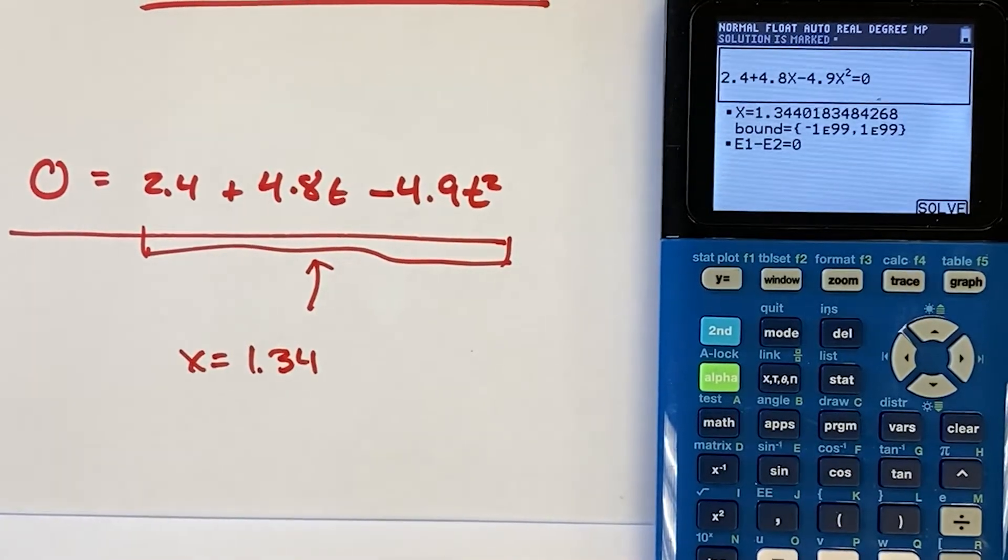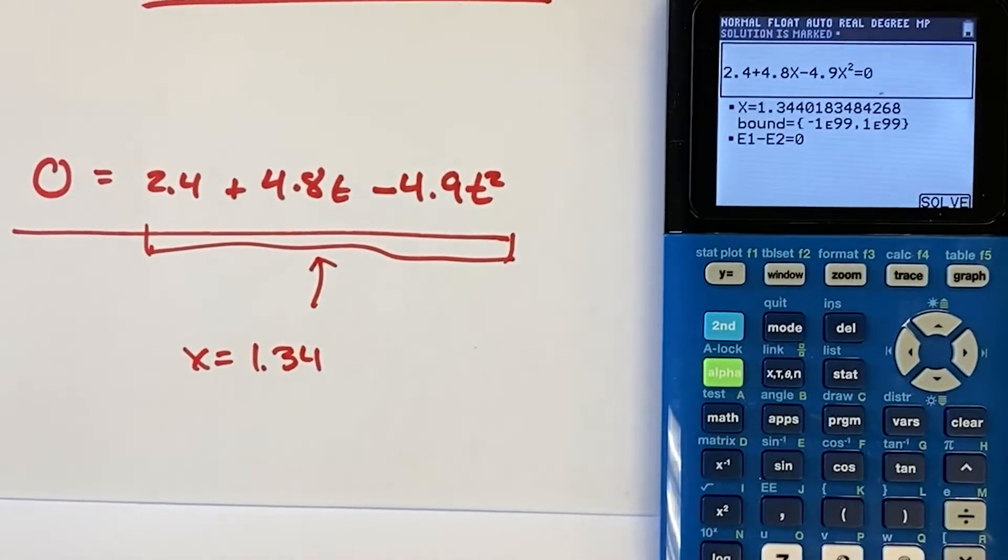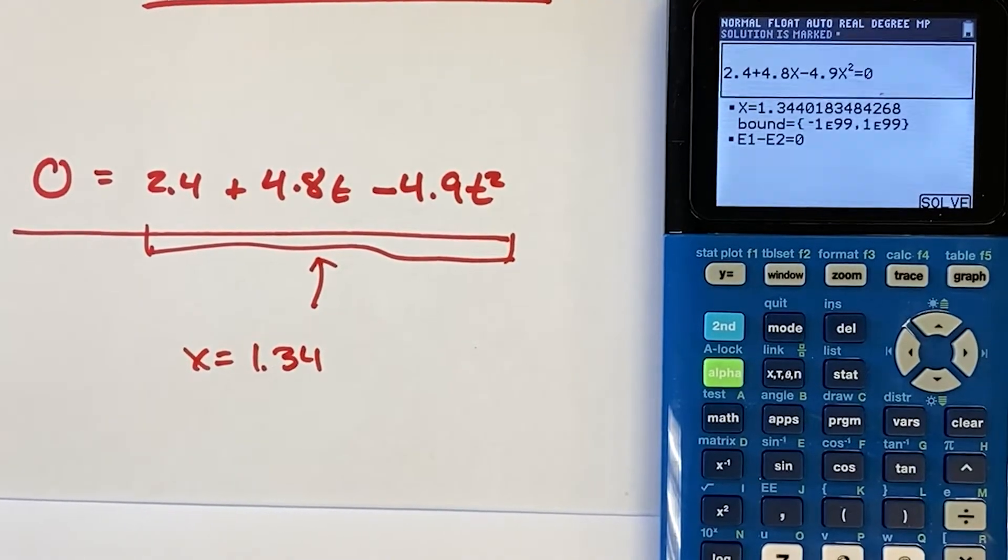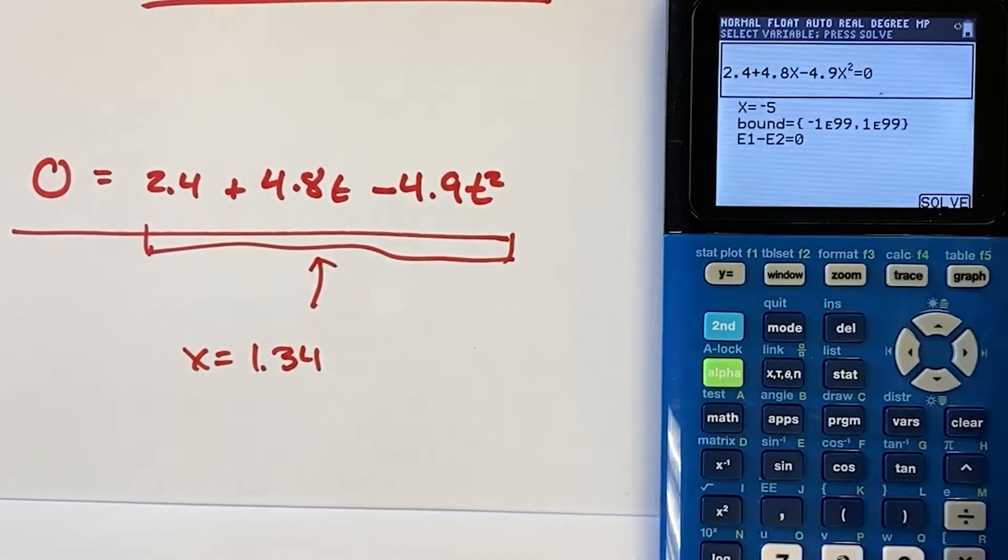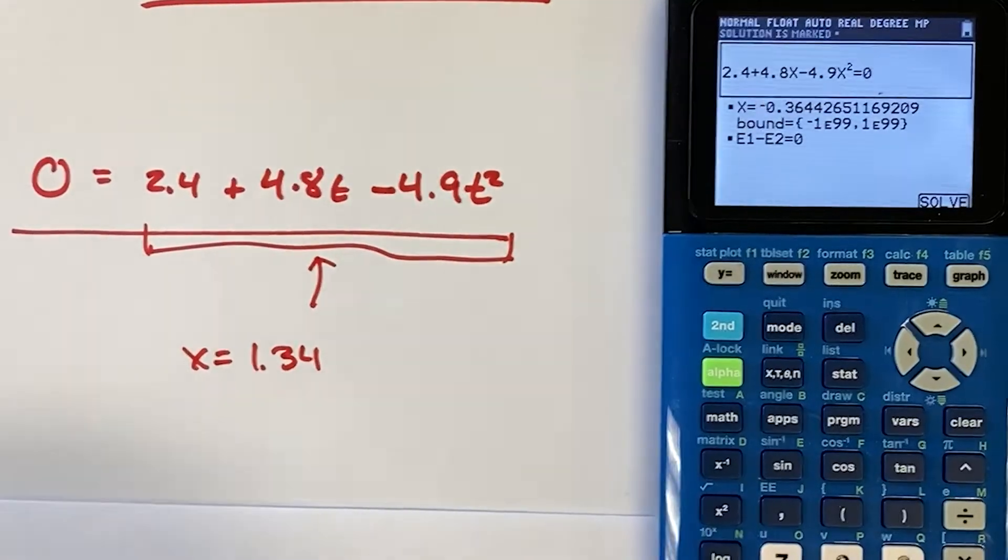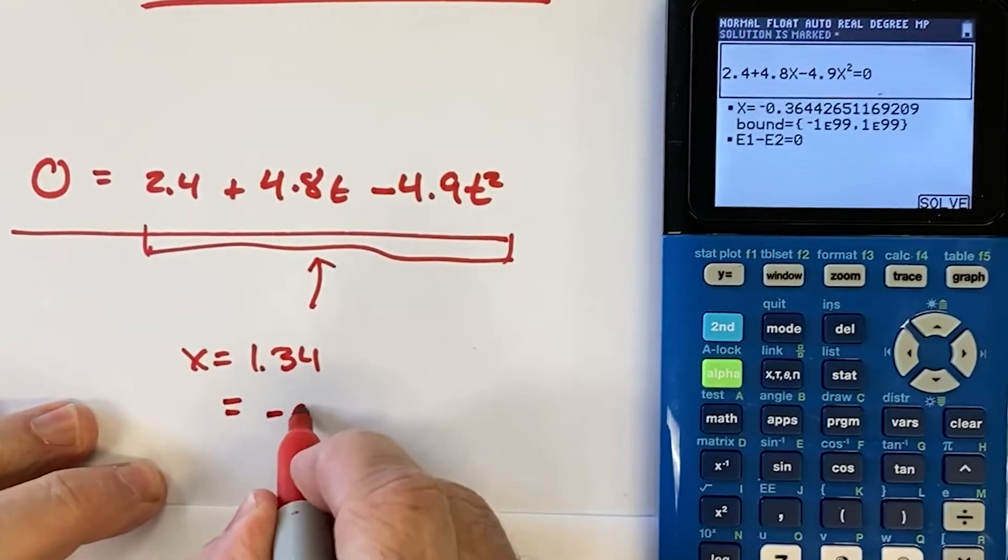Now, this is a quadratic formula. If you understand anything about quadratic formulas, there's more than one answer. So watch what happens when I change my guess to negative 5. And I push solve. I get, X is negative 0.36.